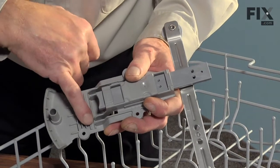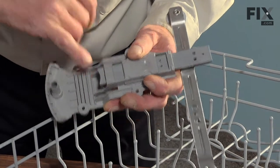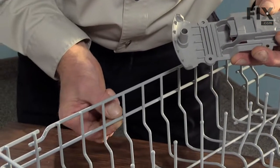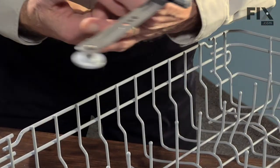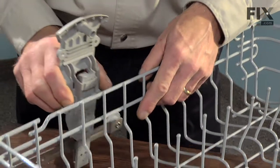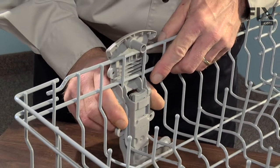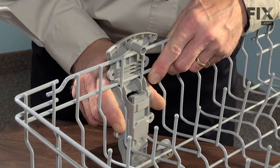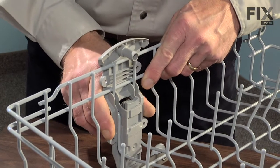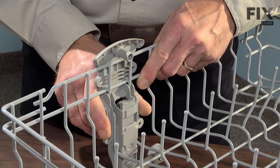To reassemble our rack adjuster, we need to locate this indentation around this portion of the rack. Take it from the outside, and there it fits in very snugly. Now all we need to do is put the cover back on and we're ready to reassemble it into the dishwasher.